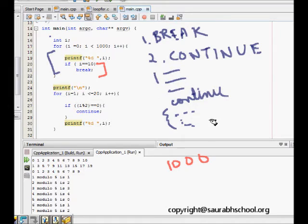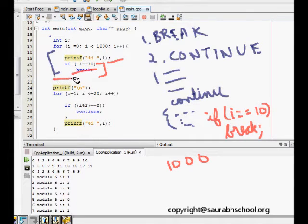It says if i is equal to ten, then break. This means if the condition is true, you break out of the loop instantly and come out to the next line after the for loop.